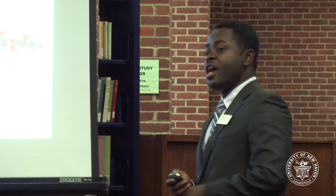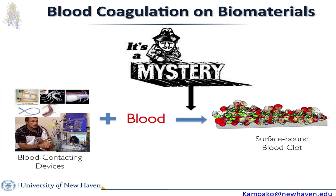Whenever you have an artificial material interacting with blood, only one thing happens: clots begin to form on the surface. We have a pretty good sense of what we think is happening — the interaction between blood and biomaterials. But to be honest, it's a model. I'm going to show you a very simplified version of biomaterial-induced clot formation.